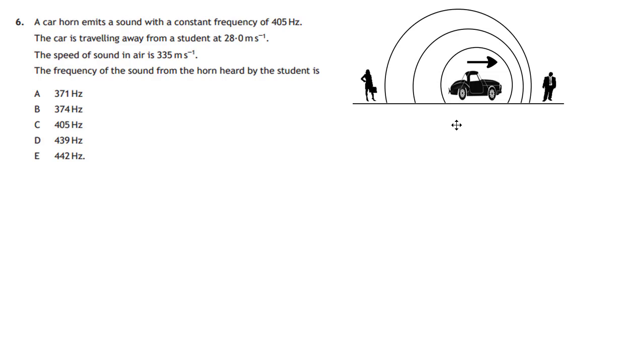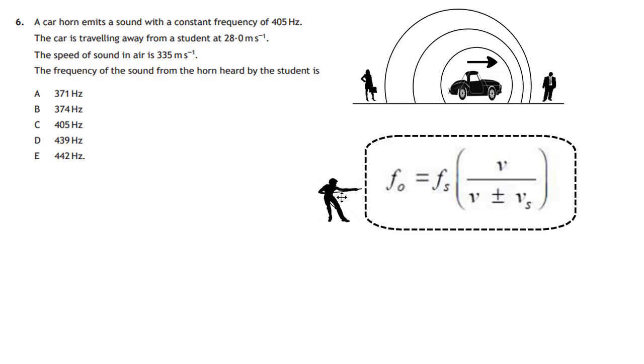Now the key diagram that you should always have in front of your mind when doing the Doppler effect is this diagram here. It sums up precisely what the Doppler effect is. For example, if you're standing here in the middle of the road, you will hear the car approaching you and the car going away from you. So you have the high frequency sound and you have the low frequency sound as the car moves away from you.